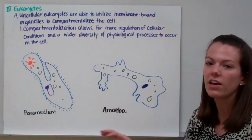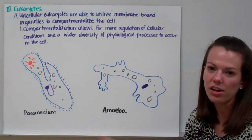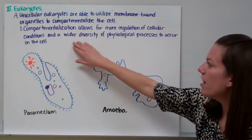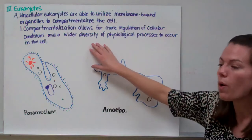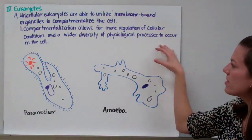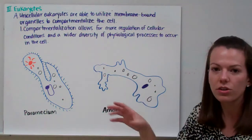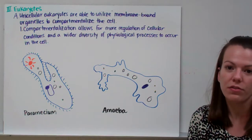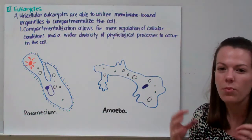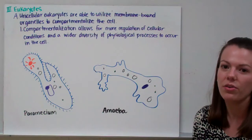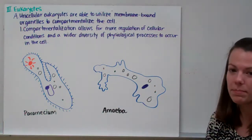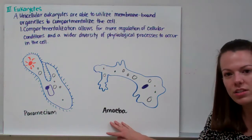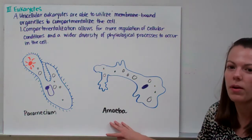Compartmentalization means one part of the cell can be highly concentrated in one enzyme while another part has none. It also allows for a wider diversity of physiological processes, since certain parts of the cell focus on different functions — a division of labor. Examples include paramecium and amoeba; protists typically fall in this group, as do some fungi.